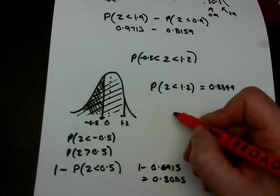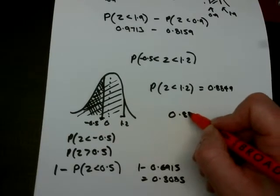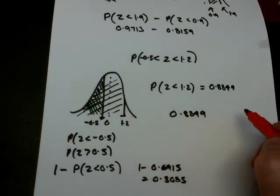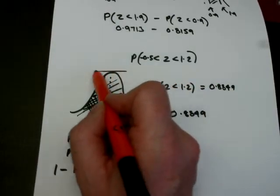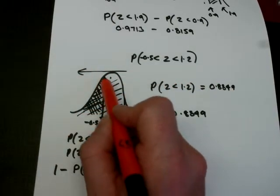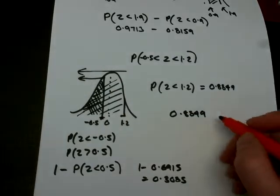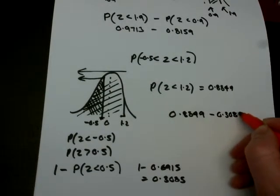And so our final answer, then, is 0.8849. Okay, that's the area all the way across from there. I take away the area that we get from there, which we worked hard, as minus 0.3085.